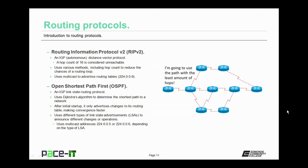RIP version 2 uses multicast address 224.0.0.9 to advertise its routing table. Open Shortest Path First, OSPF, is the most popular IGP currently being used. It is a link state routing protocol that uses the Dijkstra algorithm to determine the shortest path to a network. After its initial startup, it only advertises changes to its routing table, making convergence much faster. It uses different types of link state advertisements, or LSAs, to announce different changes or operations. OSPF uses two multicast addresses, 224.0.0.5 or 224.0.0.6, depending upon the type of LSA being transmitted.